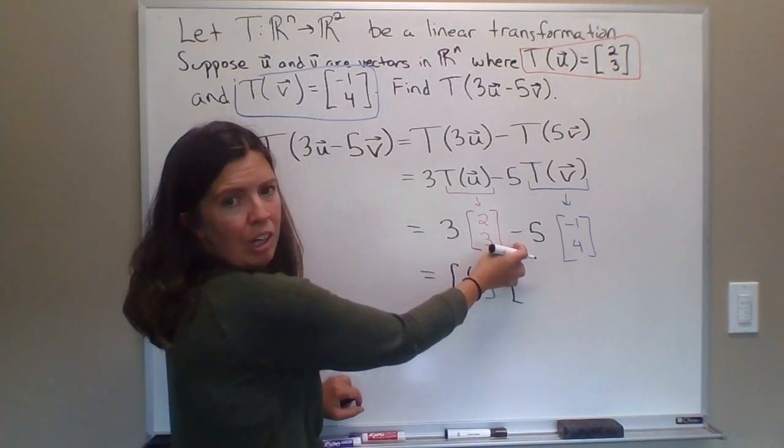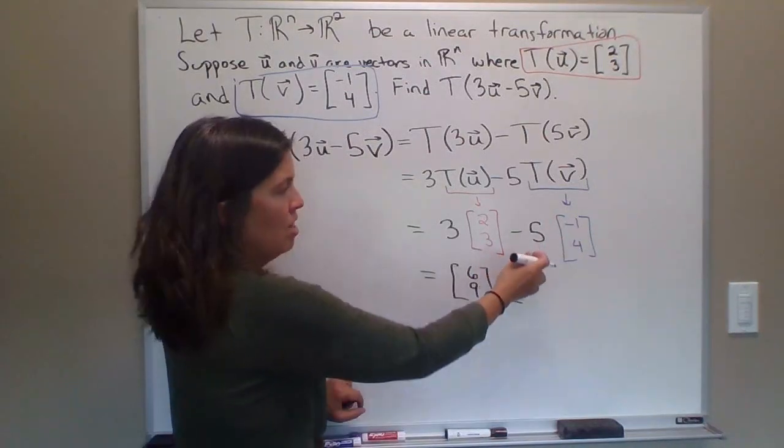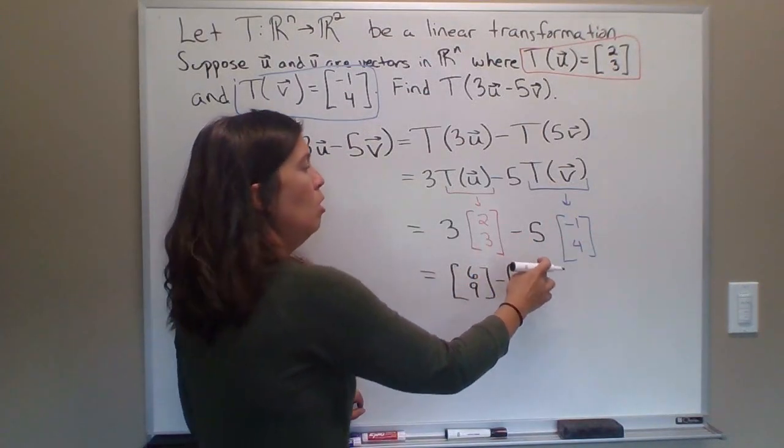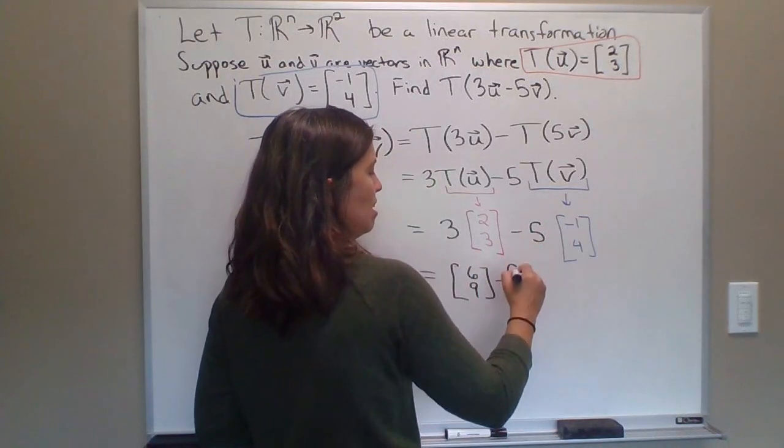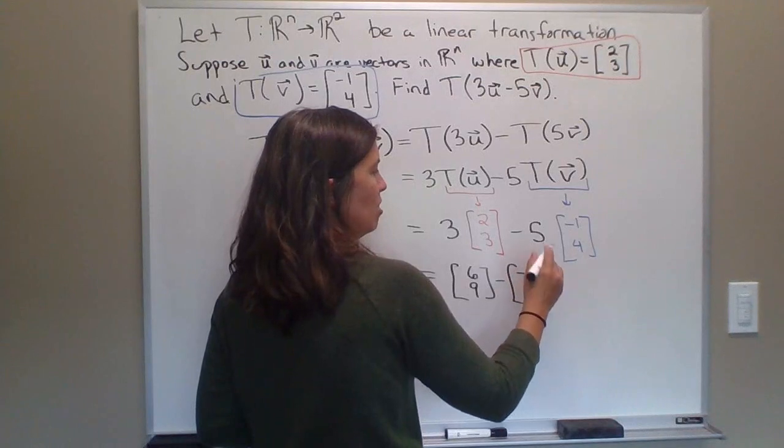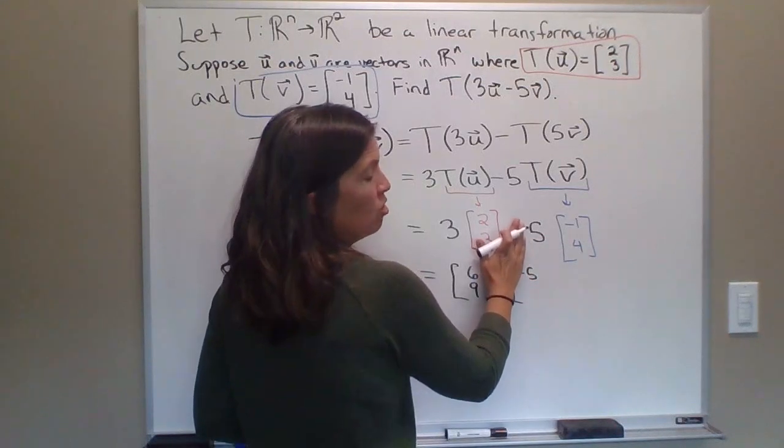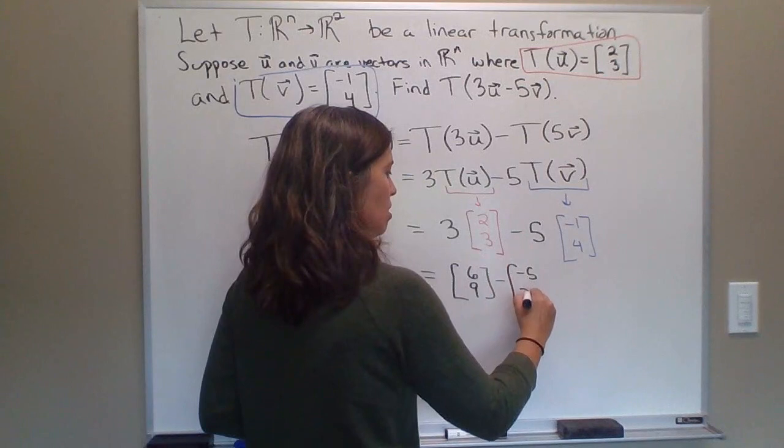I'm going to leave the negative here. You could distribute the negative, then you would want to change this to a plus right here. Or not, I'm going to leave it out. So this is 5 times -1. Just be careful with the negatives here. So I'm distributing just the 5. So I'm going to put [-5,20] here.